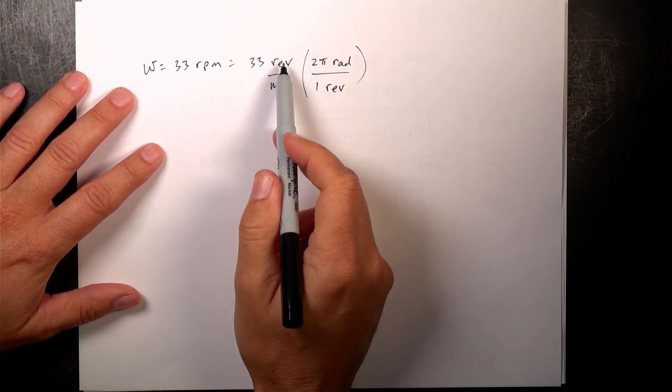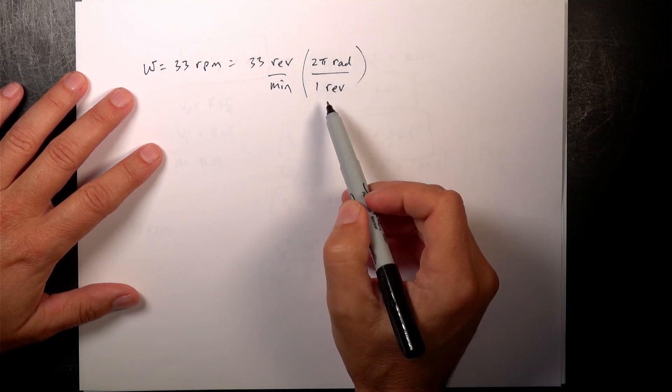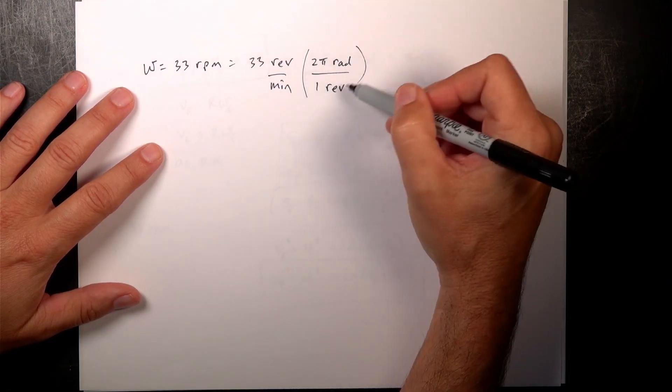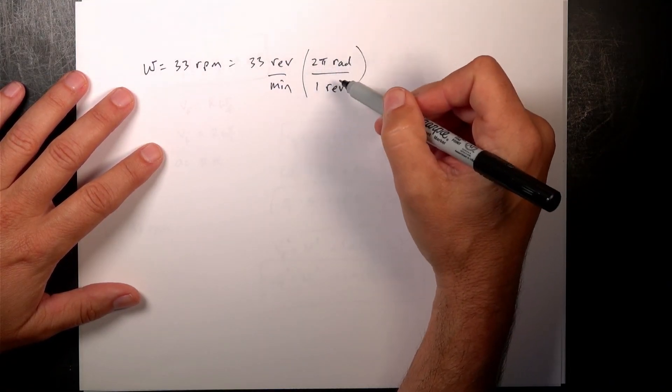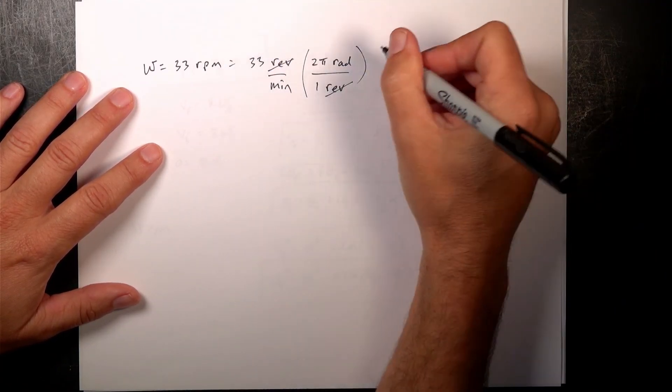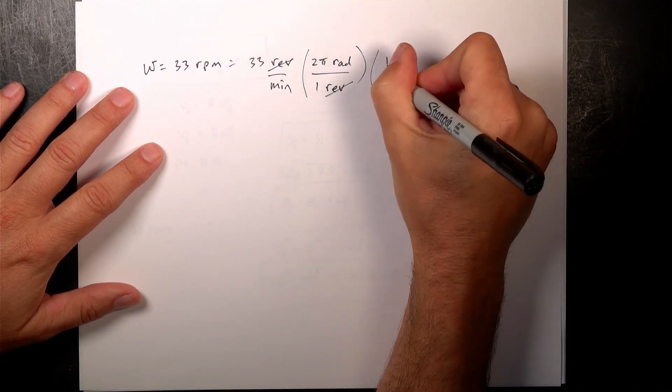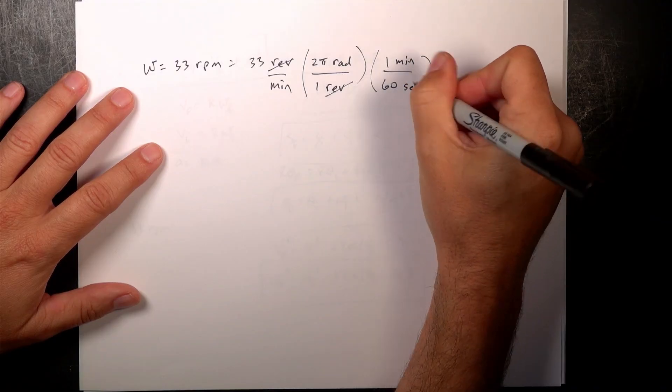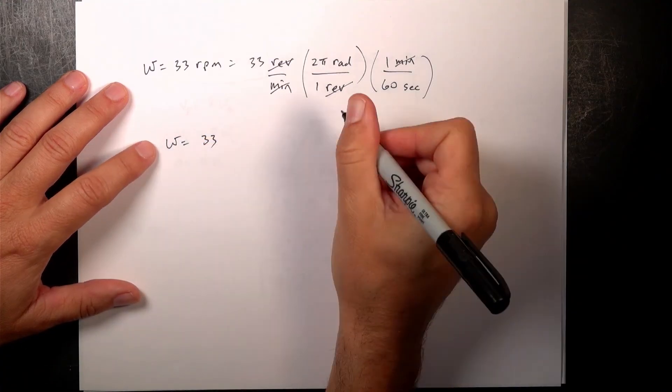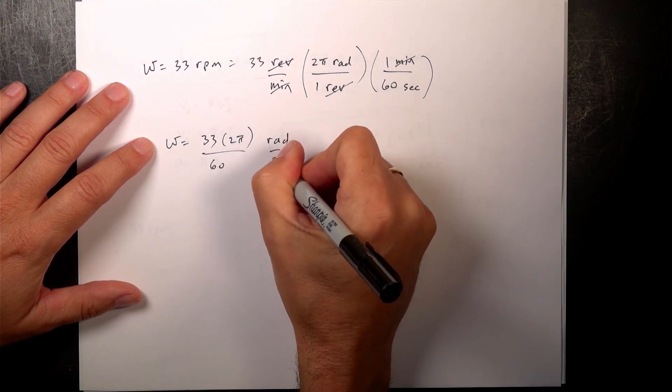And so I can multiply 33 revolutions per minute, multiply it by the fraction, two pi radians over one revolution. Because this is one. Two pi radians is one revolution. So this is not something crazy. I'm just multiplying by the number one. But the revolution units cancel. And then I can do the same thing for minutes. I can say there are, in one minute, there are 60 seconds. And the minutes cancel. So then I get omega equals 33 times 2 pi divided by 60 radians per second.